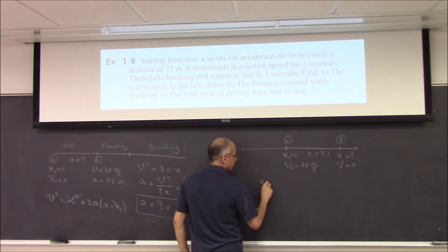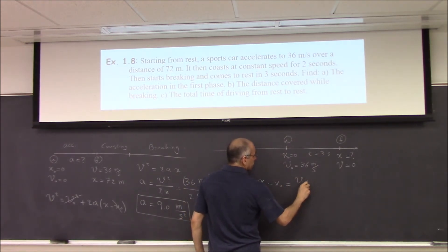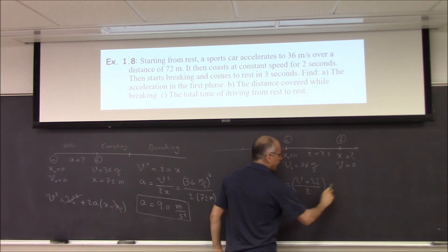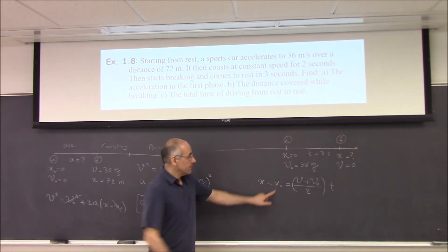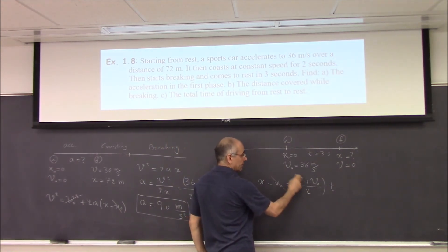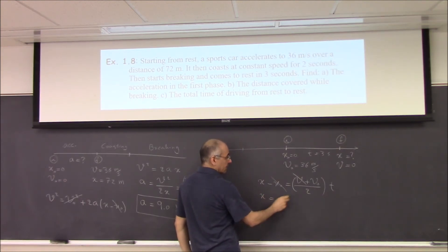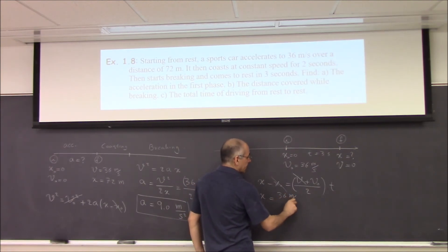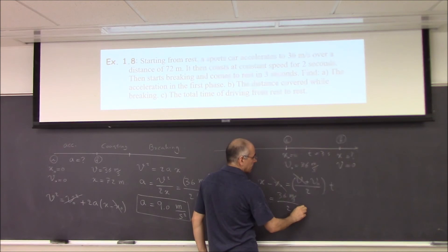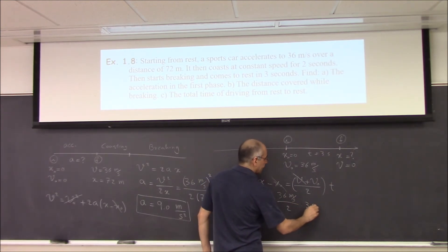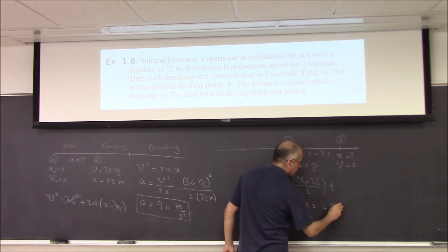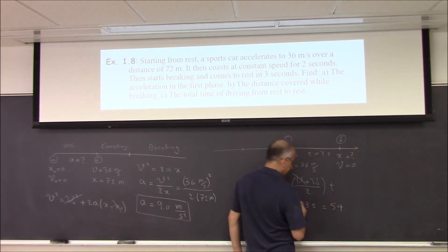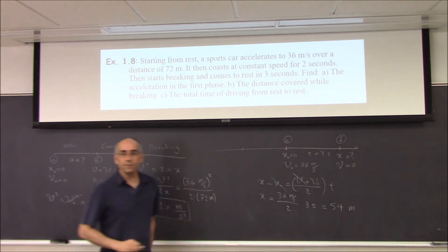That solves the problem. So, that's x minus x-naught, equal to v plus v-naught, divided by 2, times t. We're looking for x. And what is 0? x-naught is 0. Throw that away. v is 0. Throw that away. So, x becomes v-naught divided by 2 times t. v-naught is 36 meters per second, divided by 2, times 3 seconds. And, you see that 18 times 3 is 54 meters. Meter per second times second. That's the distance. You see how easy it becomes?